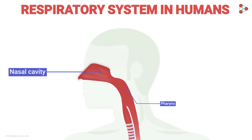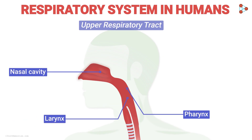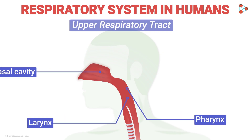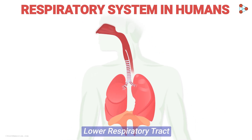The nasal cavity, the pharynx, and the larynx make up the upper respiratory tract. This is where we concluded the previous part. Now it's time we have a look at the lower respiratory system.